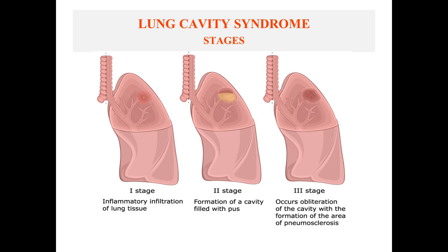The most common localization of tuberculosis caverns is in the apex of the lungs. There are three stages of cavity formation: first is inflammatory infiltration of lung tissue, or the pneumonia stage; next is formation of the cavity filled with pus and rupturing into the nearest bronchus; and the third stage involves obliteration of the cavity with formation of an area of pneumosclerosis, in the case of adequate treatment.